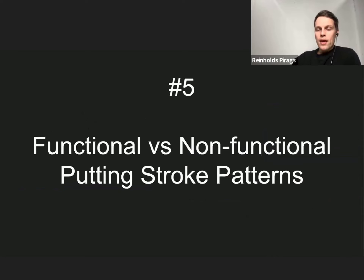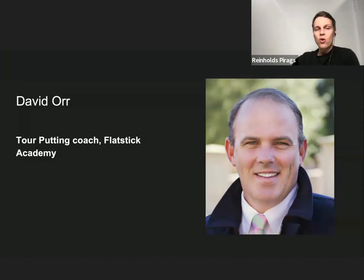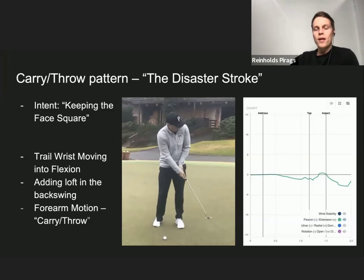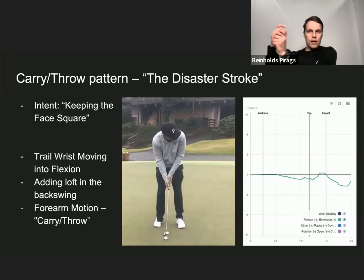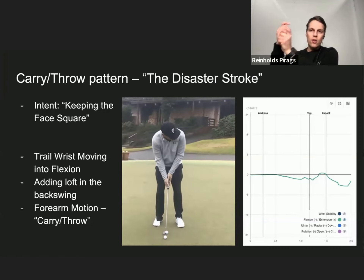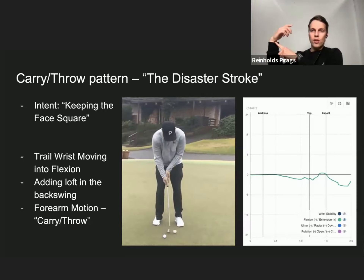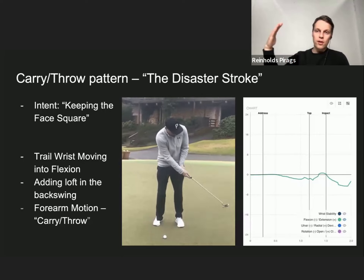Lastly, it's putting. We've been measuring many tour player and amateur putting strokes and found functional and non-functional putting stroke patterns. This was presented by David Doerr, a tour putting coach who worked with players like Justin Rose and works at the Flat Stick Academy. He describes the disaster stroke — the carry and throw pattern — where the player, intending to keep the putter face square, carries it in the backswing then throws it in the downswing, with the trail wrist moving into flexion.